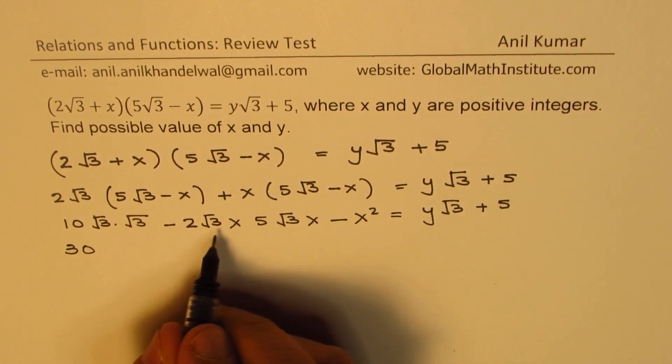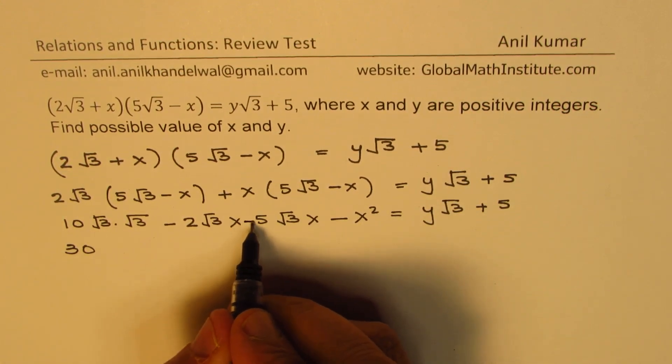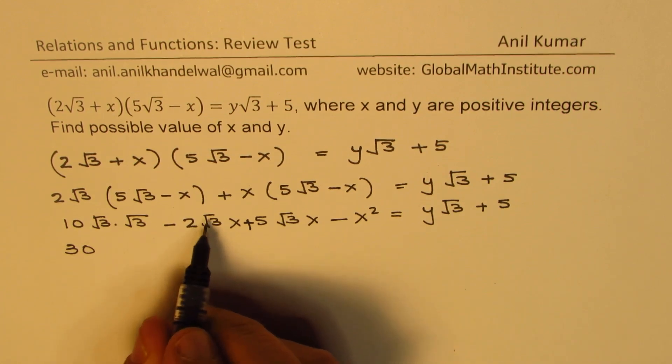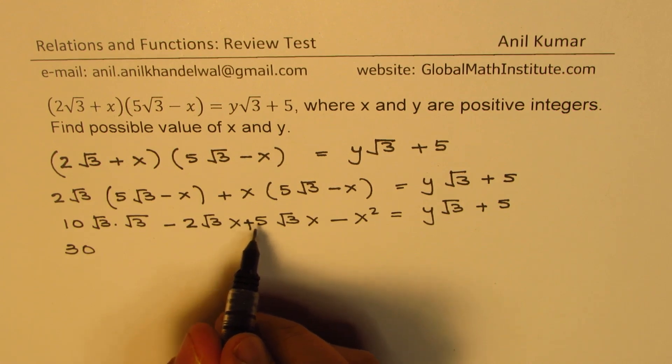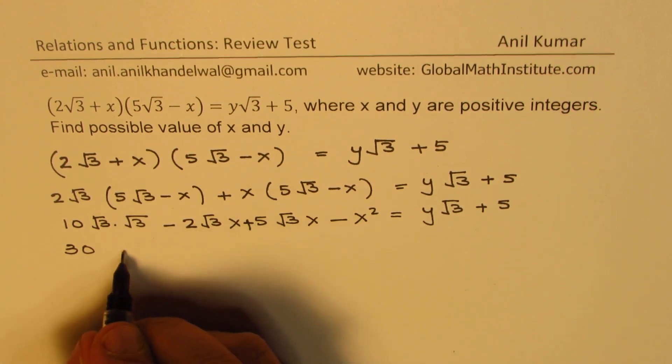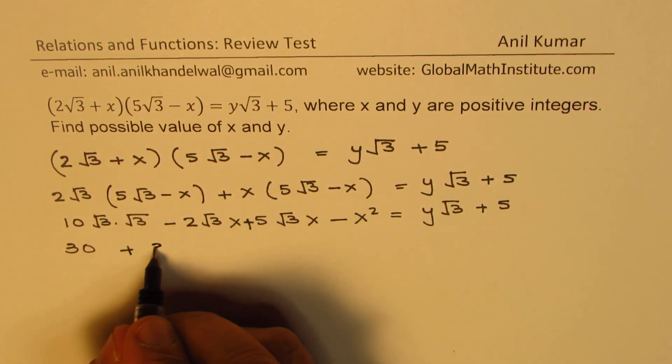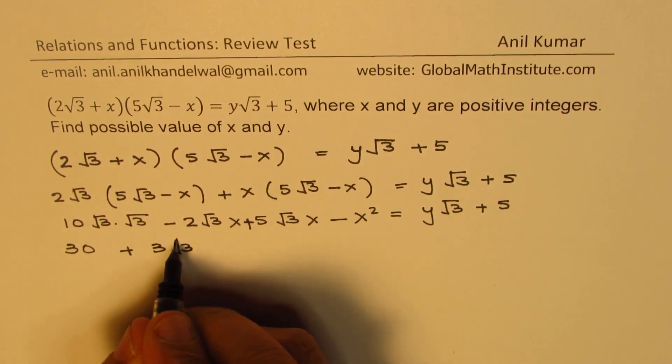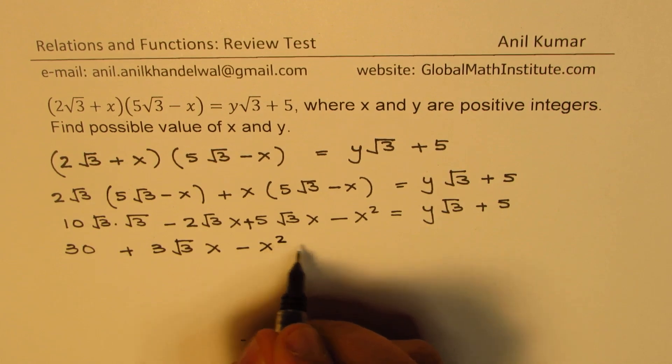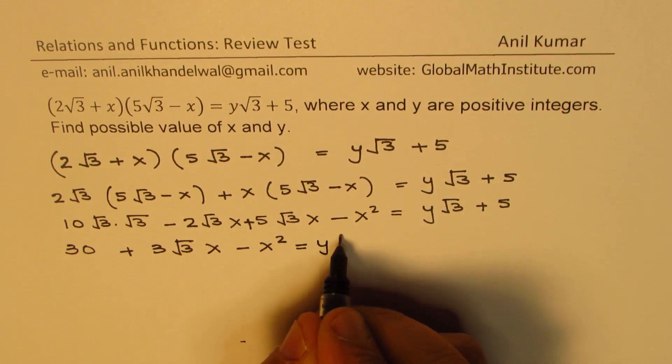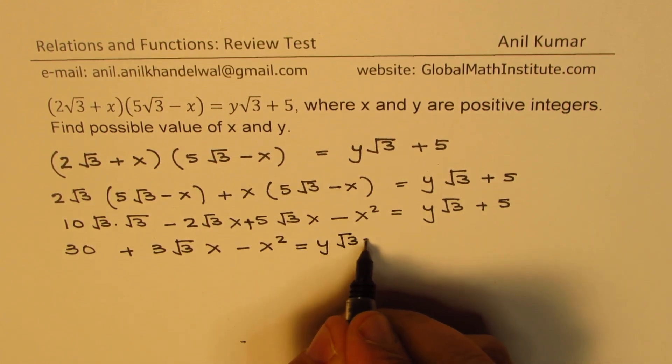Now when you combine these two terms, this is plus in between, -2√3 and 5√3. When you add them, you get 3√3, right? So you get 30 + 3√3x - x² equals to y√3 + 5.